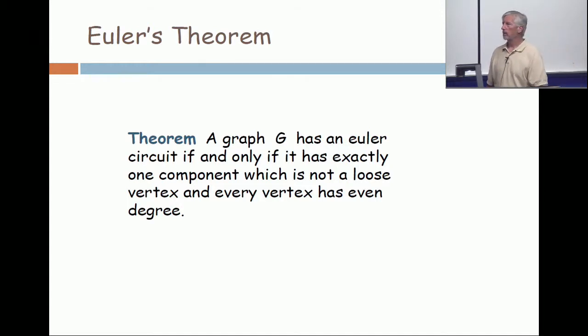And here's Euler's theorem. A graph G has an Euler circuit if and only if it has exactly one component which is not a loose vertex, and every vertex has even degree.